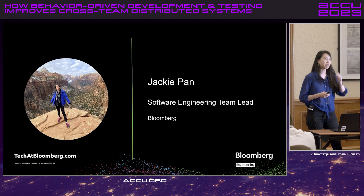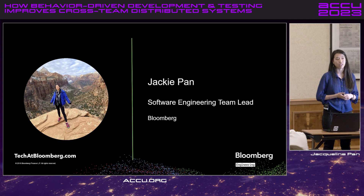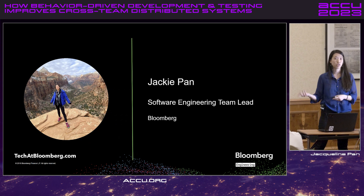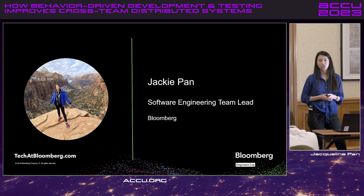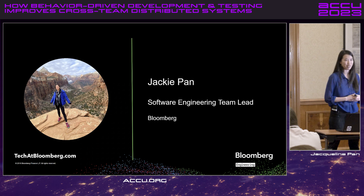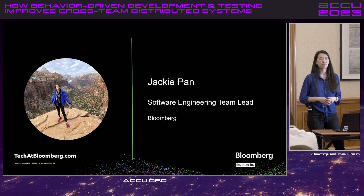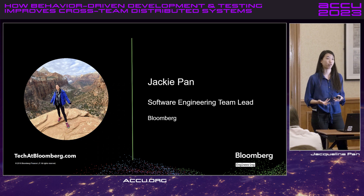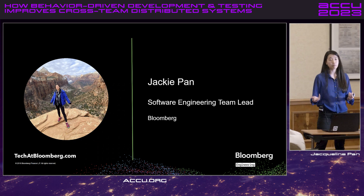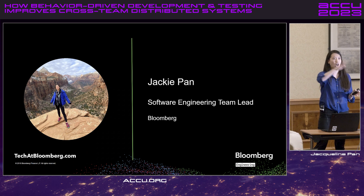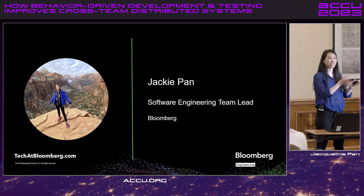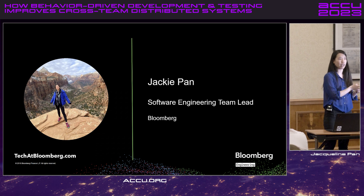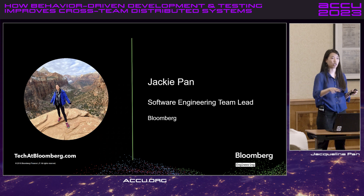A little bit about myself. My name is Jackie. I've been at Bloomberg for about five and a half years. I started off as a software engineer and moved into a team lead role last year. The team that I lead is the post-trade trade automation team within our buy-side order management system. Basically what we do is build software to automate workflows for clients, and we're the entry point for all of the operations that happen in the post-trade world.